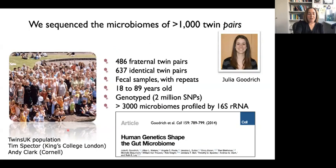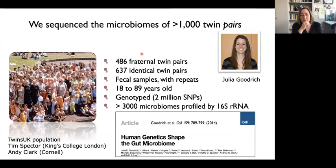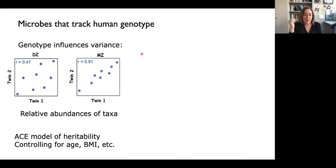However, we thought that study might be underpowered and using a broad measure. So in 2014, working with Tim Spector out of King's College London — who has this large TwinsUK population — we sequenced microbiomes by 16S of many twin pairs, both fraternal and identical, to get at this question. For any microbe with quantitative relative abundance data, we looked for differences in within-twin-pair similarity between dizygotic and monozygotic twins, using this as a basis for calculating heritability.